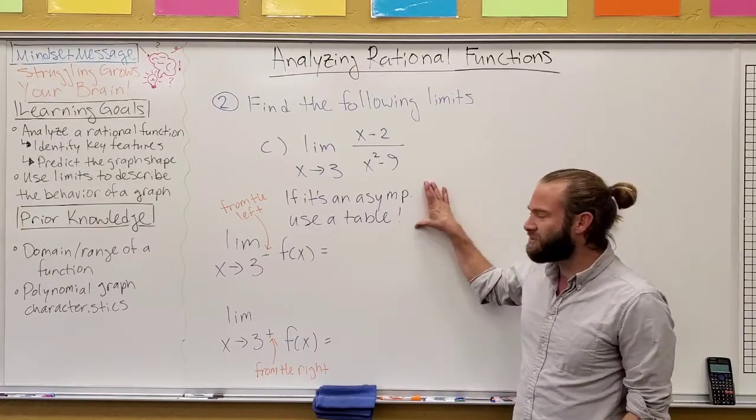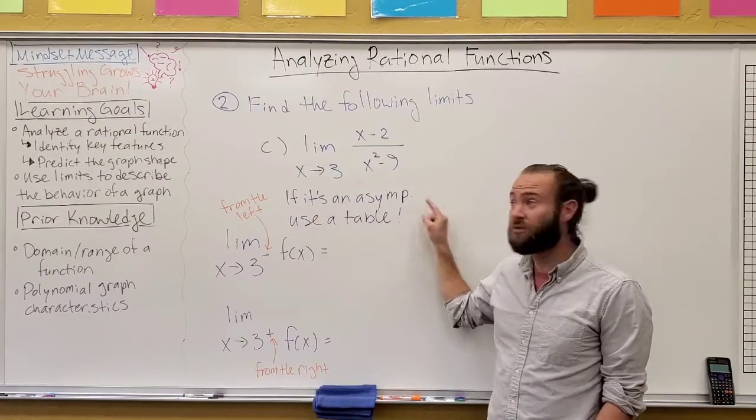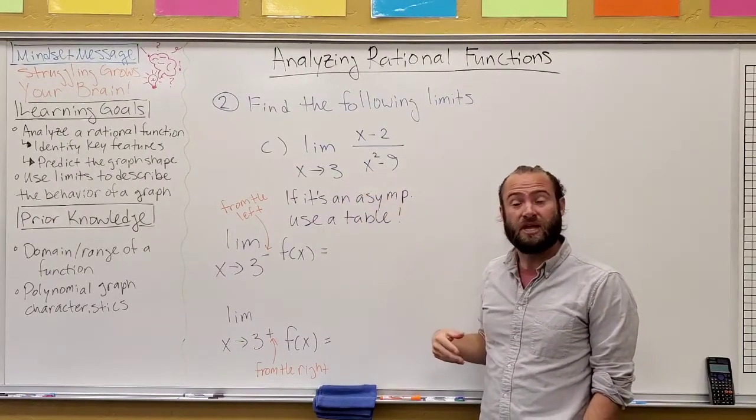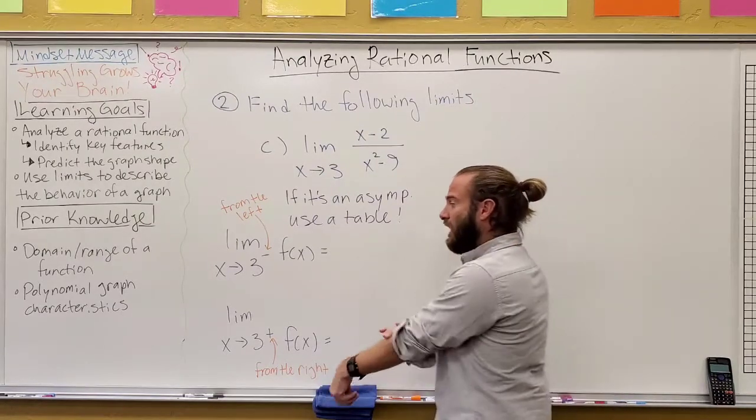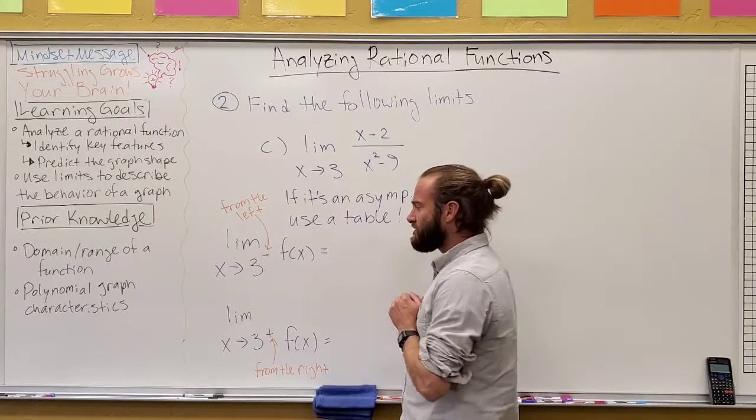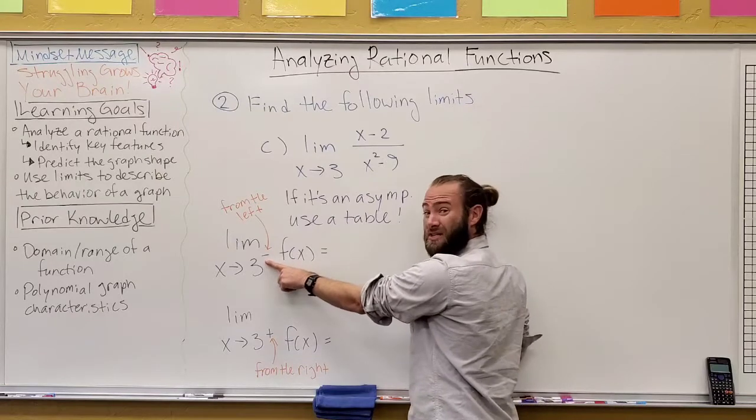It turns out, for our purposes in this class, we're just going to stick with using a table if you know that that value is an asymptote. And if you look at the table of values that we already looked at for our graph,